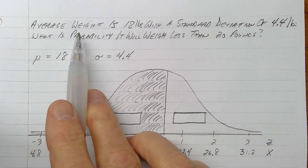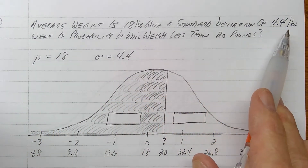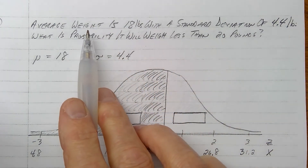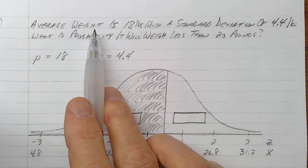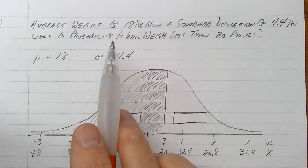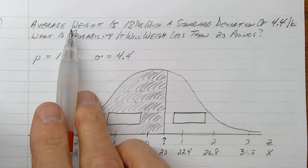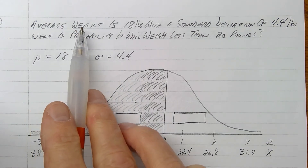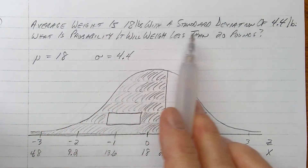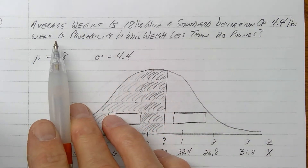So let's just make up a little story here. The average weight is 18 pounds with a standard deviation of 4.4 pounds. You guys can make up your own little story — the average weight of a cat, dog, fox, pig, fish, whatever you want to think about. We did this experiment and found that the average weight is 18 pounds, give or take 4.4 pounds. The question is: what's the probability it will weigh less than 20 pounds?